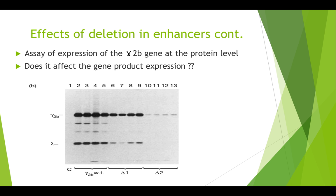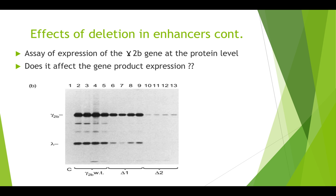Lanes 2 to 5 are cells transfected with the wild-type gene as a reference. Lanes 6 to 9 have the delta 1 deletion, and lanes 10 to 13 have the delta 2 deletion. Antibodies have a heavy and a light chain, so immunoprecipitating the heavy chain also pulls down the light chain. Comparing band intensities, delta 1 gave a slight reduction in expression, while delta 2 gave a profound reduction, implying delta 1 deleted part of the enhancer while delta 2 deleted most, if not all, of the enhancer element.